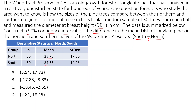The south has a larger mean than the north, which is why we do south minus north. Checking conditions: n = 30 for each, so the CLT gives us approximately normal sampling distributions. There are surely more than 300 trees in each section so independence is satisfied. Random samples were stated, so the random sample condition is met. A tree clearly can't be in both the northern and southern regions, so the samples are independent.